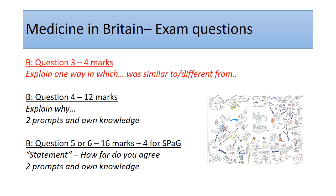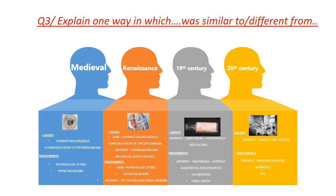It will say: explain one way in which something was either similar or different from a different time period. So we've got our four time periods: medieval, renaissance, the 19th century, and the 20th century. For example, they may say: explain one way in which the causes of disease were different from medieval to the 19th century.